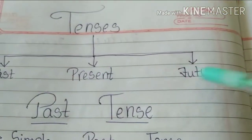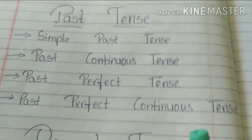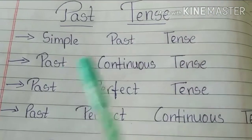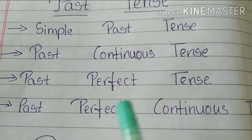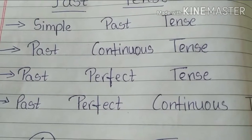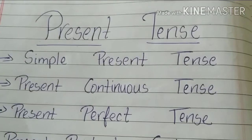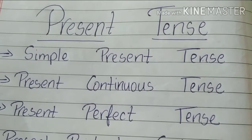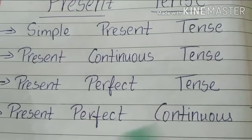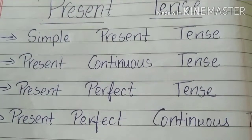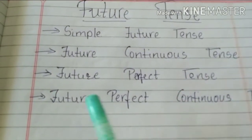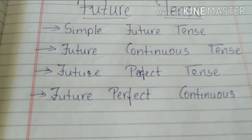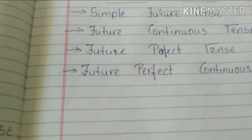These three tenses are again divided into four different parts each. Past tense divides into simple past tense, past continuous tense, past perfect tense, and past perfect continuous tense. Present tense divides into simple present tense, present continuous tense, present perfect tense, and present perfect continuous tense. Future tense divides into simple future tense, future continuous tense, future perfect tense, and future perfect continuous tense.